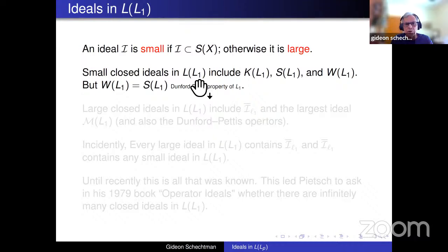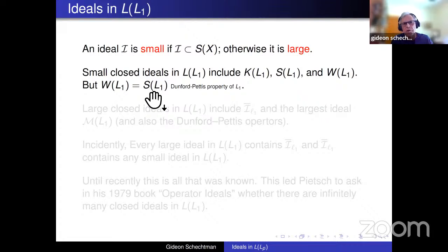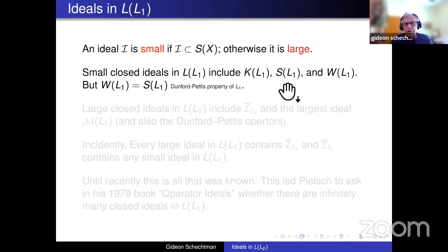Small ideals in L(L1) include: the compact operators — always a small ideal in any space; the strictly singular operators — it turns out these two are different ideals; and the weakly compact operators — in L1 the weakly compact operators are the same as the strictly singular operators, due to the Dunford-Pettis property of L1. So there were really only two proper small ideals known.